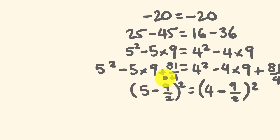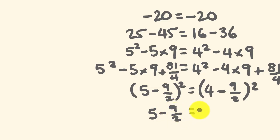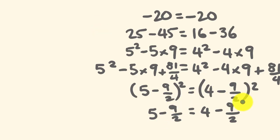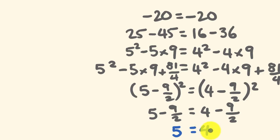Both sides are squared, so I'm going to square root them. This gives 5 minus 9 over 2 equals 4 minus 9 over 2. I then cancel out the negative 9 over 2 from both sides by adding 9 over 2 to both sides, and I end up with 5 equals 4 — which means 2 plus 2 is equal to 5.